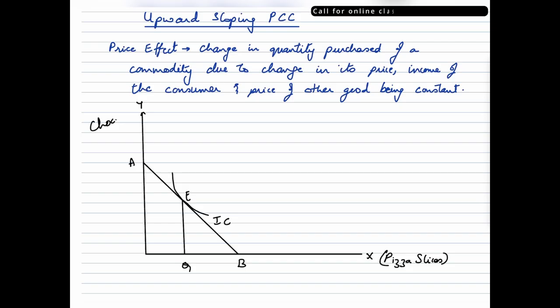We are talking about an upward sloping price consumption curve in this particular video. Let's talk about what price effect is to begin with so that you know what we are talking about and then we'll build up from there. When we talk about price effect, it is basically measuring the change in the quantity that is purchased of a given commodity when its price changes, specifically when the income of the consumer and the price of the other good are held constant.